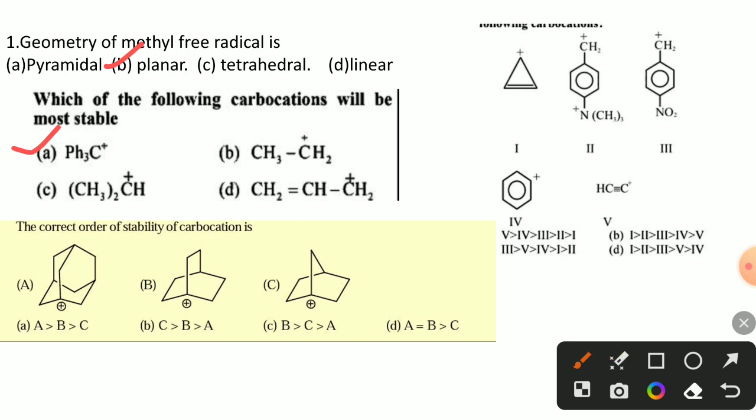When the ring size is large enough, the carbocation can achieve a somewhat planar geometry, so those carbocations are more stable. Therefore, in this question the stability order is: adamantyl carbocation is the most stable, followed by barrelyl, and then norbornyl carbocation is the least stable.